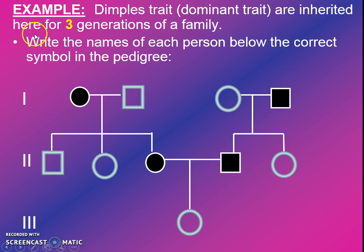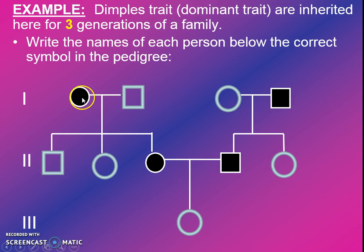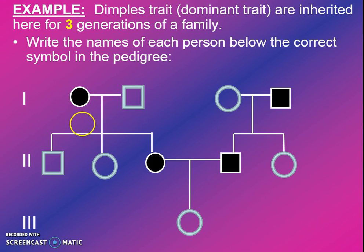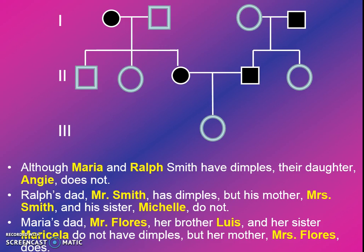Your goal is going to be to read the scenario on the next slide, and using this pedigree — which you're going to have to draw in your notes — you're going to write the correct name of each person underneath the correct symbol. Remember that filled in means that they have the trait; in this case, dimples. So if it's filled in, that means that person has dimples, and you're going to write their name underneath. So here's the drawing again if you need to draw it, and here's our scenario.